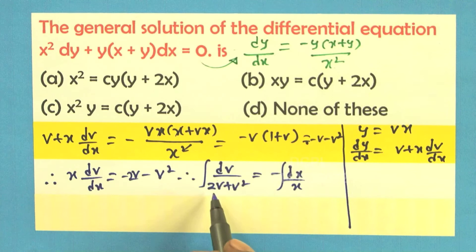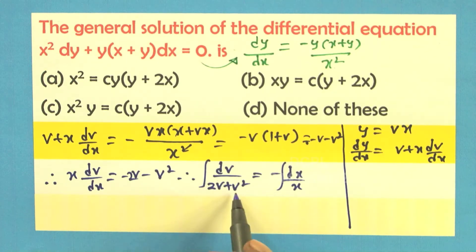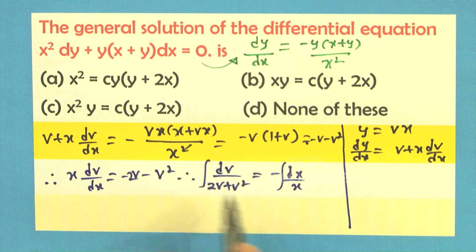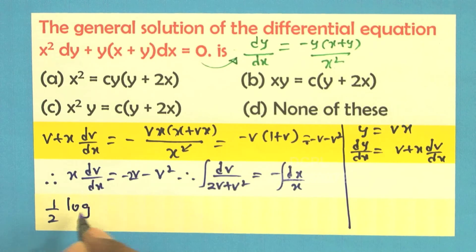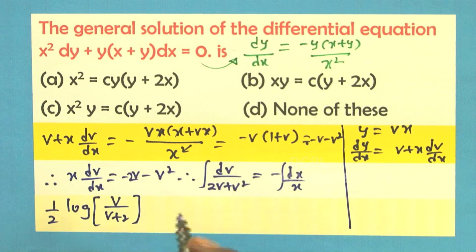You can easily integrate this by splitting using partial fractions: 1 by v into 2 plus v can be split as 1 by v minus 1 by v plus 2, giving you half of log v minus log of v plus 2, which equals half of log of v divided by v plus 2, equal to minus log x plus c.